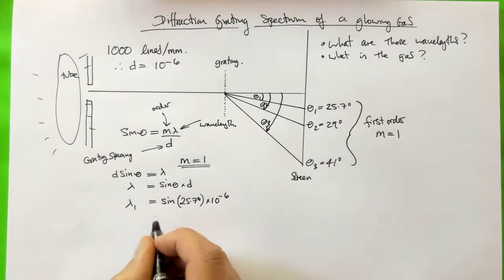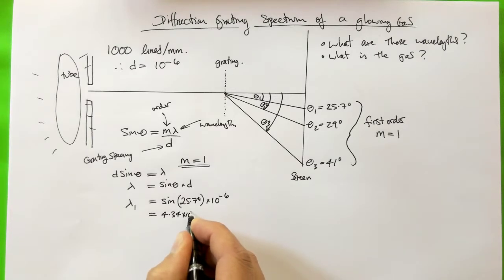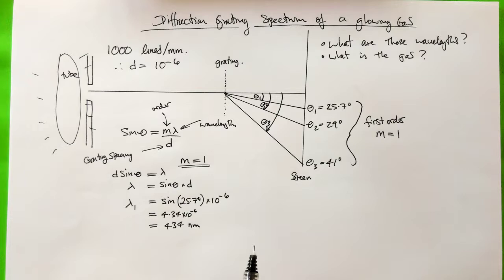So, if you put sine of 25.7 into your calculator, you will get that it is 4.34 times ten to the minus six. And our lambda comes out as 434 nanometres. I'm sorry, it's 0.434 times ten to the minus six. Now, if we multiply by ten to the minus six, this is what we end up getting, right? Because our nanometre is a ten to the minus nine. Okay.